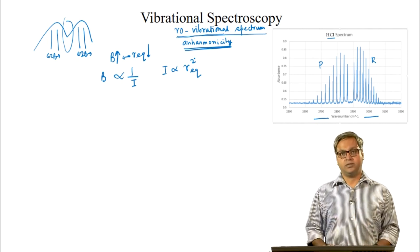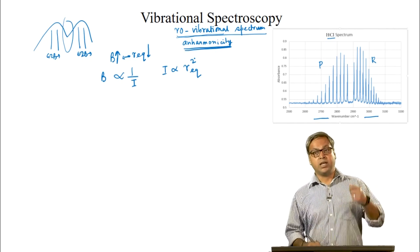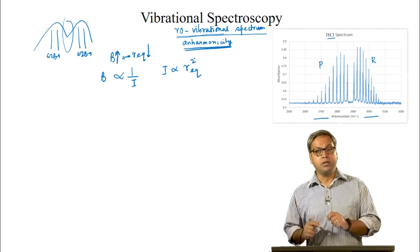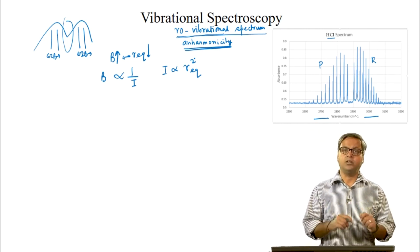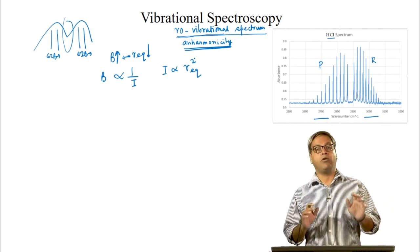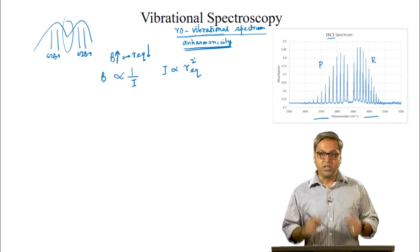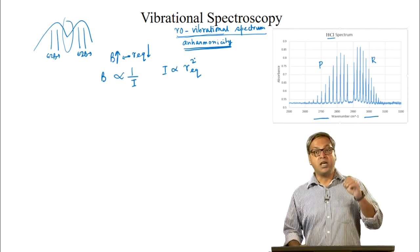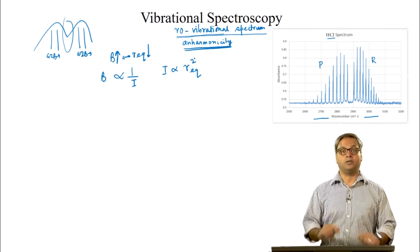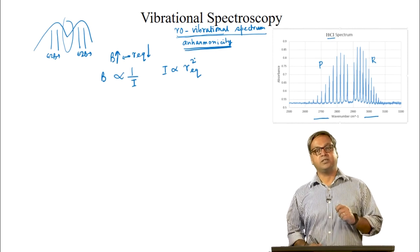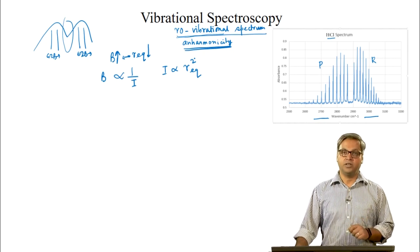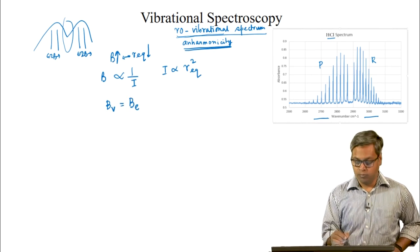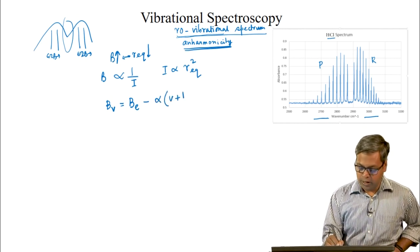So the rotational constant for a molecule in the V equals 1 state is smaller than the rotational constant in the V equals 0 state. In the previous analysis, we assumed that B, the rotational constant, would always be the same. Now let us see what happens if we do not make that assumption. We can see that the rotational constant should be affected by the vibrational quantum number — in a sense, the rotational energy is not independent of the vibrational state. As they are dependent on each other, they are coupled. The expression that relates the rotational constant in different vibrational levels is: B_V = B_E minus α times (V + 1/2).